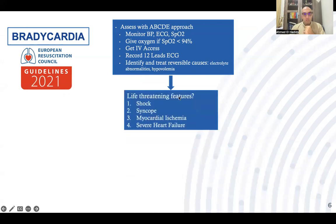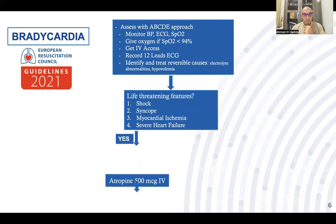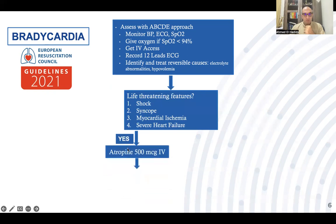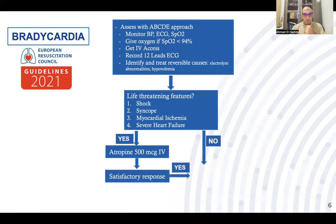Then check for life-threatening features — shock, syncope, myocardial ischemia, and heart failure symptoms. If any of these are present, immediately give atropine 0.5 milligram intravenous bolus, then check whether there is a satisfactory response to atropine.